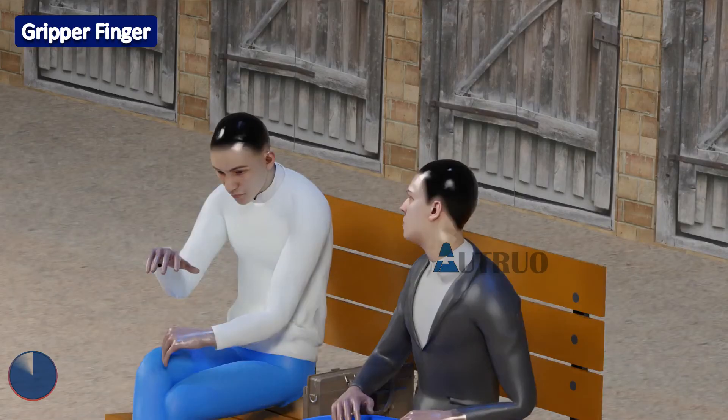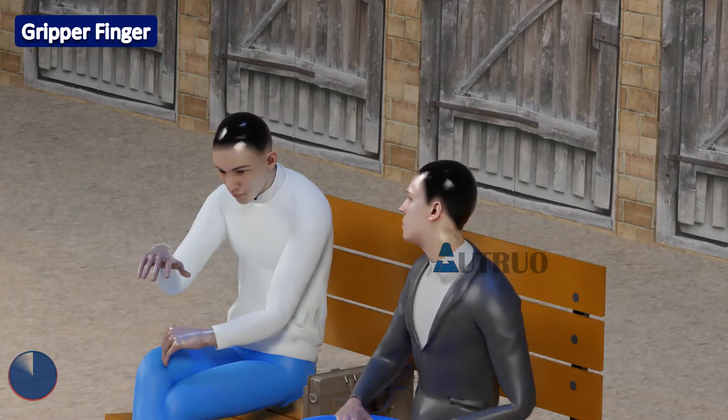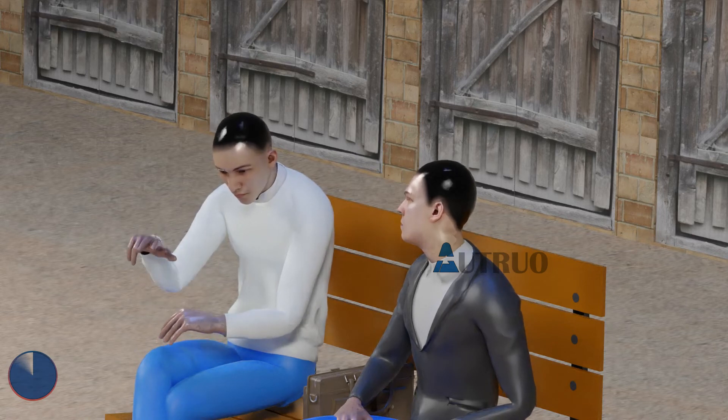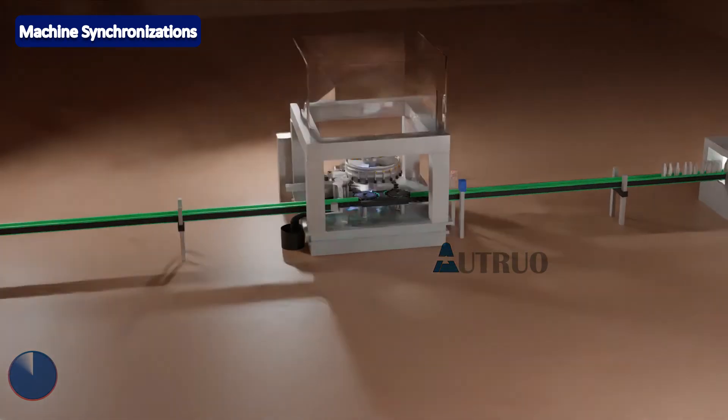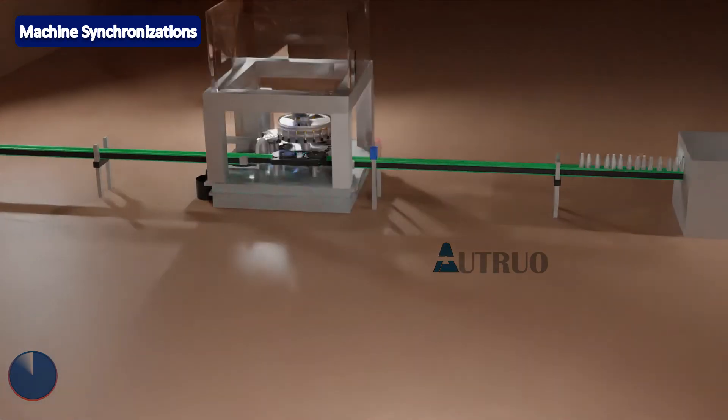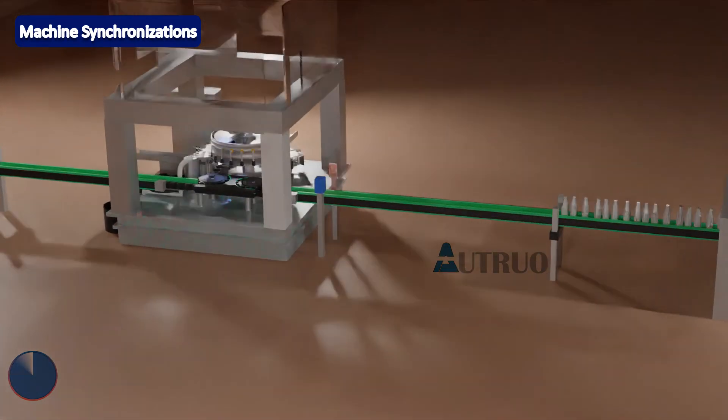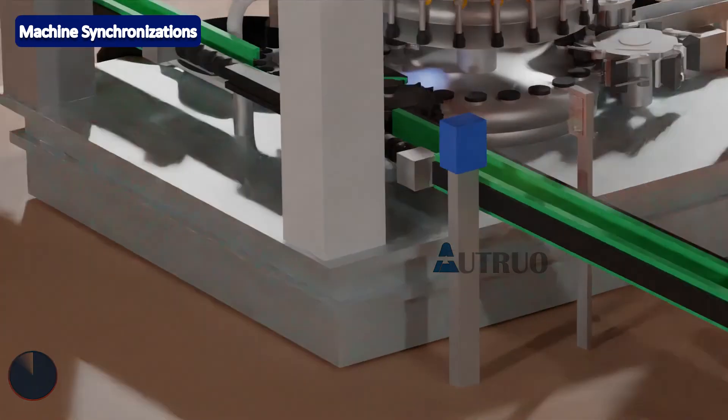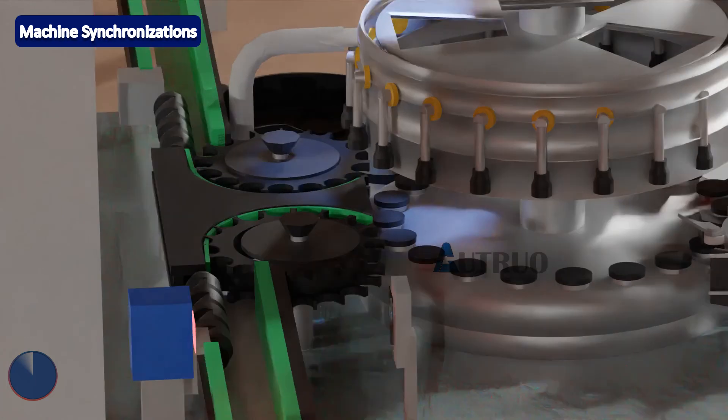Now if I may ask, the conveyor system, how does it move in synchronization with the machine? I mean when the machine is at low speed, the conveyor also moves very slowly. Likewise, when the machine is at high speed, the conveyor also moves very fast in order to meet up.